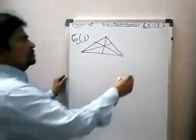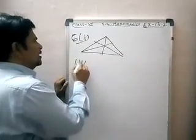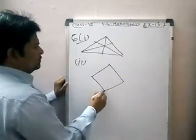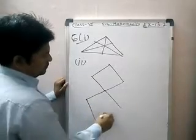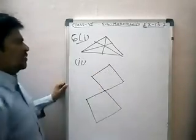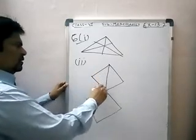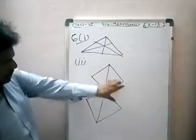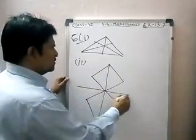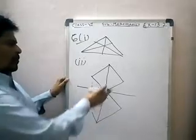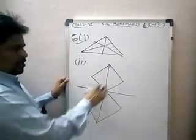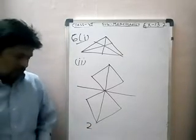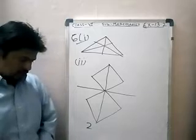Next shape — part B, the second part. How many lines of symmetry are possible in this shape? First line: left part and right part are the same — there are two triangles. Second line is horizontal — upper part and lower part are also the same. But diagonals are not possible, so only two lines of symmetry possible in this shape.